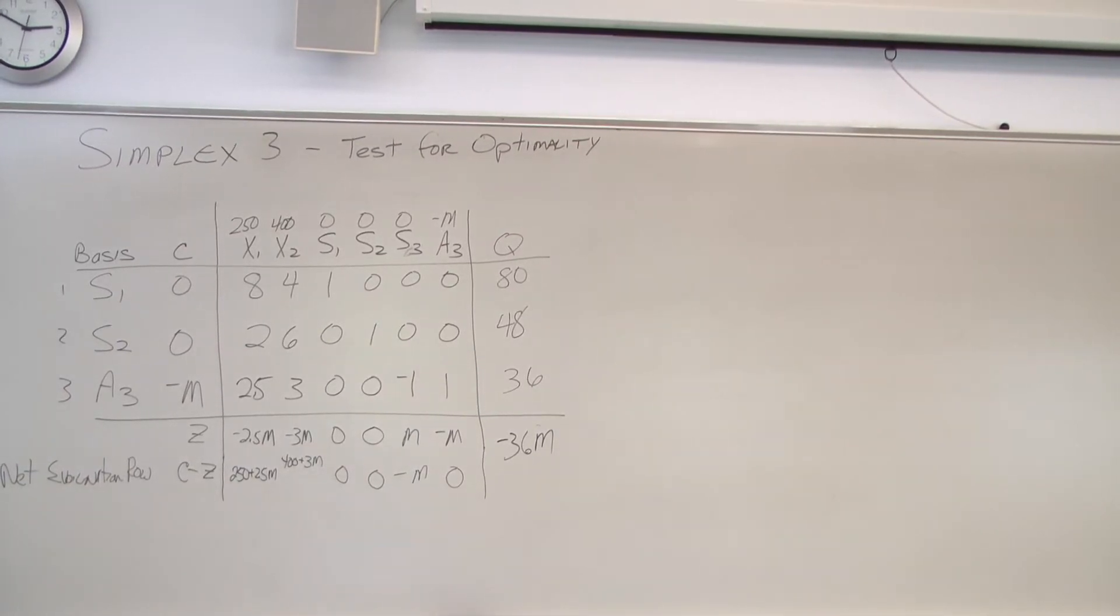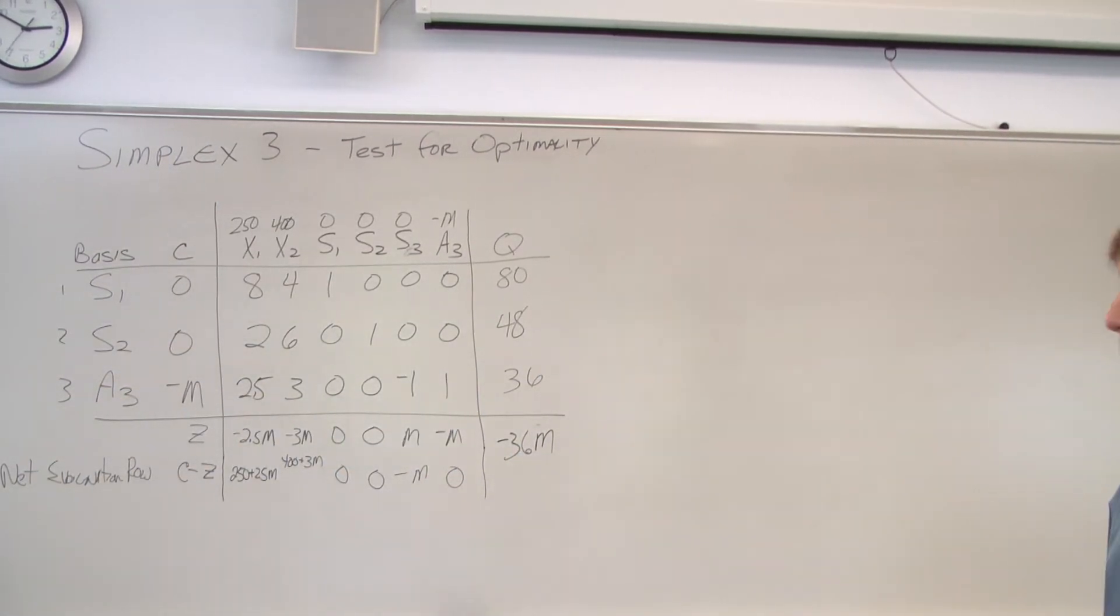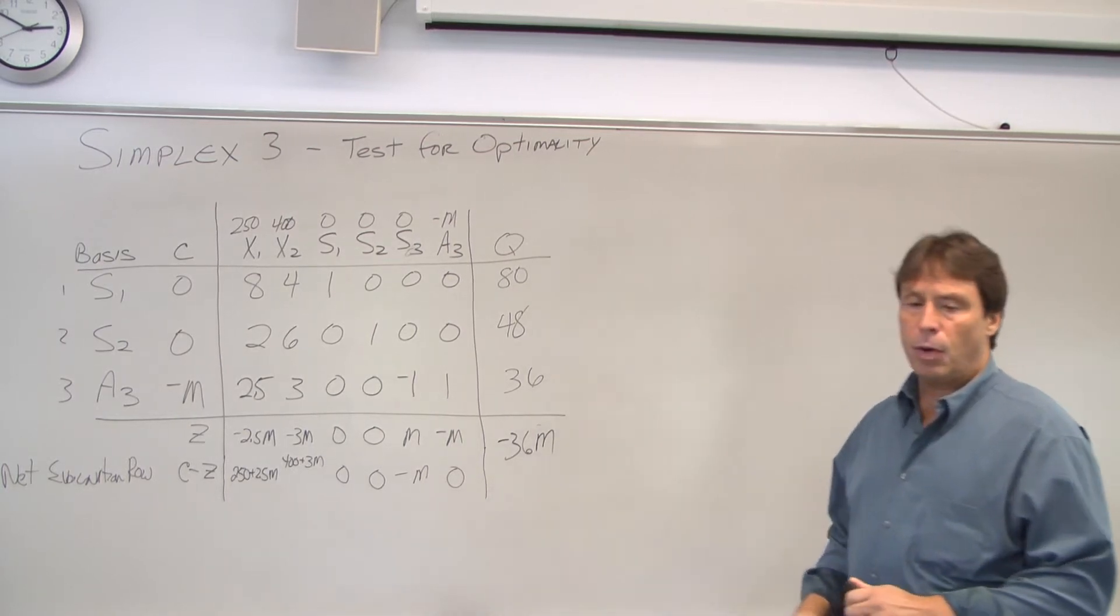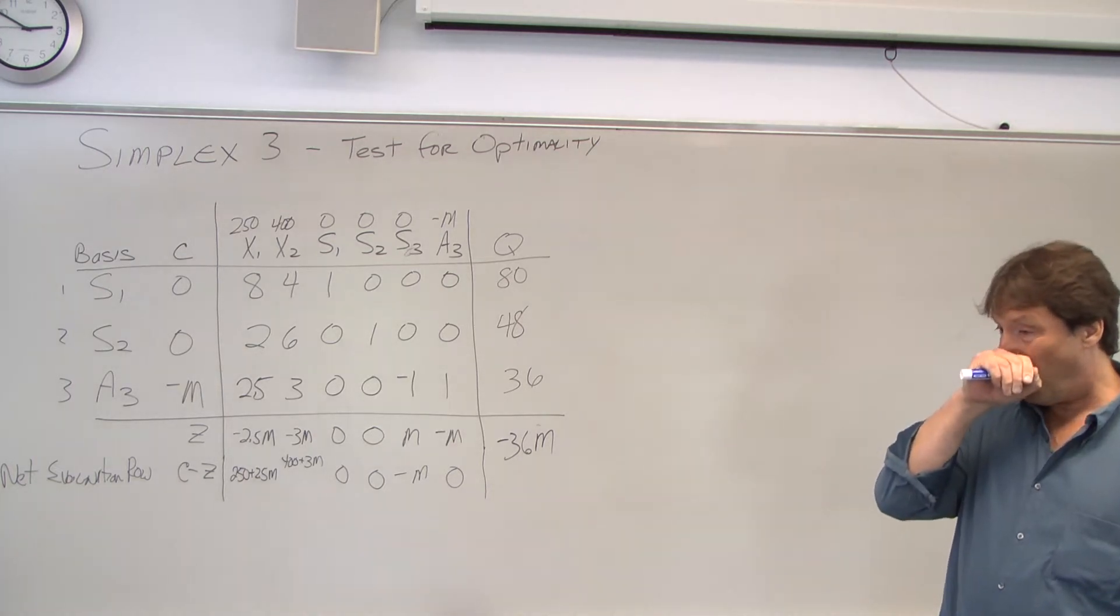What we're trying to do with the simplex method is determine our maximum profit and at what point that occurs. What we do with the net evaluation row is we determine if more profit can be made or if we're at that maximum profit point.